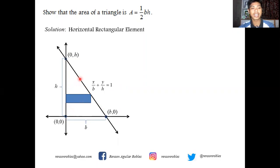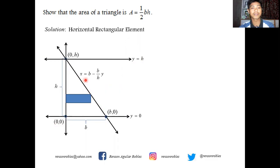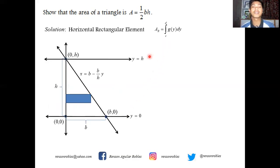Now if we want to use a horizontal rectangular element, the element is touching the line x/b + y/h = 1 on the right side and the y-axis on the left side. The region is bounded from y = 0 to y = h, and the equation of the line should be written in the form x = g(y), giving x = b − (b/h)y. Setting up using the formula from a previous video, the area is the integral of g(y) dy, which is the integral of (b − (b/h)y) dy evaluated from 0 to h.